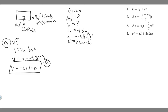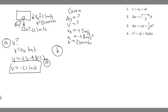Part b asks how far the mailbag is below the helicopter. This is tricky because two things are moving downward: the mailbag and the helicopter. Delta y gives the total distance the mailbag falls, but since the helicopter is also moving down, the distance between them isn't just delta y — we need to subtract how far the helicopter travels.